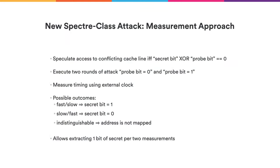If we want to practically use this attack for leaking secrets, we perform two measurements to extract a single bit. In the first measurement, the loop executes slow if the bit we want to measure is zero. In the second, the loop executes slow if the bit is one. Performing two measurements, we'll have possible results fast-slow or slow-fast, which allows distinguishing between zero and one states of the bit. There is actually a third possible outcome where executions are indistinguishable, which indicates that the targeted address is not mapped — interesting in itself because it reveals something about the address space layout. In summary, we can leak one bit of secret information per each two measurements.